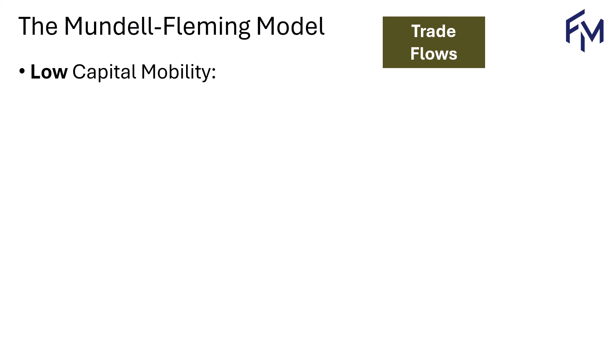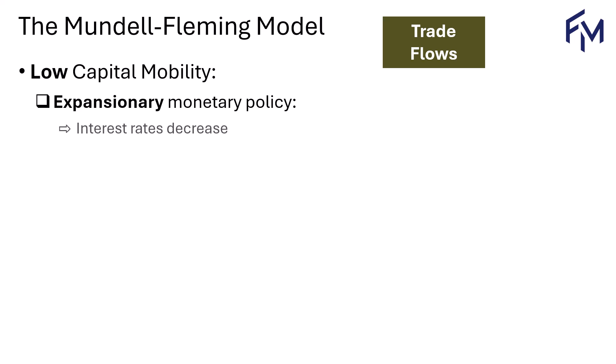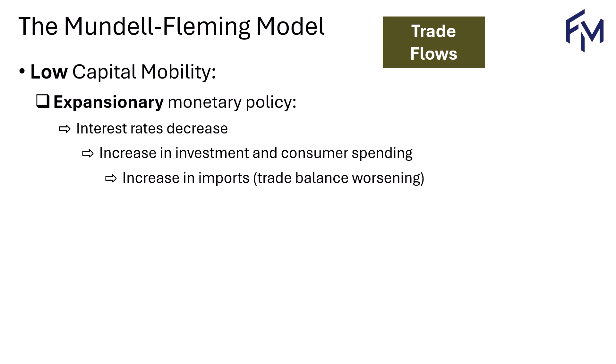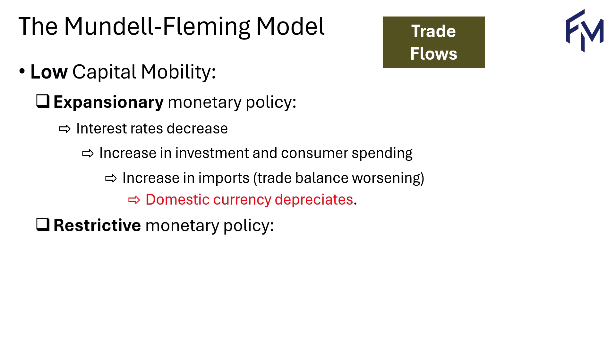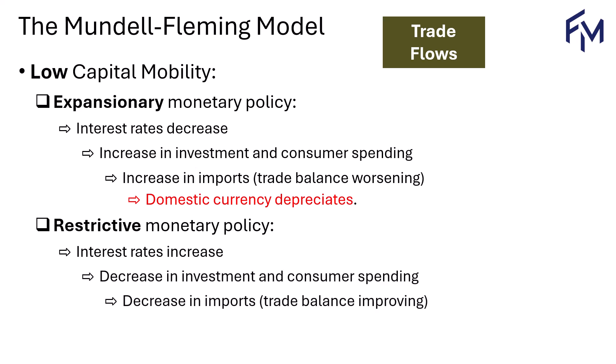Looking at monetary policy under low capital mobility: with expansionary monetary policy, interest rates fall, encouraging more investment and consumer spending. More spending leads to higher imports, worsening the trade balance, and that leads to a depreciation of the domestic currency. With restrictive monetary policy, higher interest rates mean people spend less, invest less, and keep money in the bank. That means less imports, so the trade balance improves and the domestic currency appreciates.